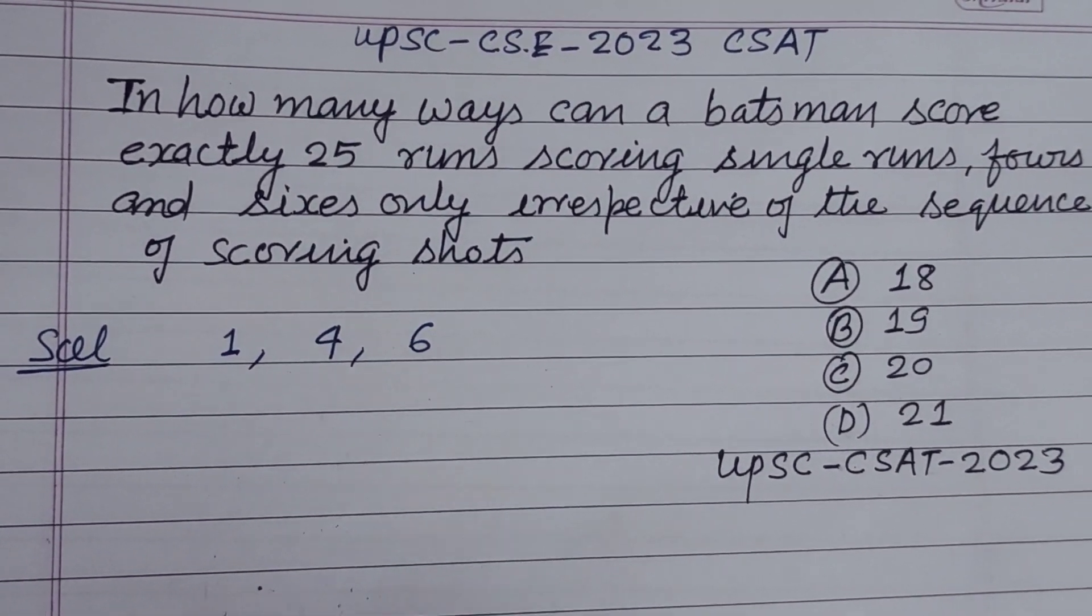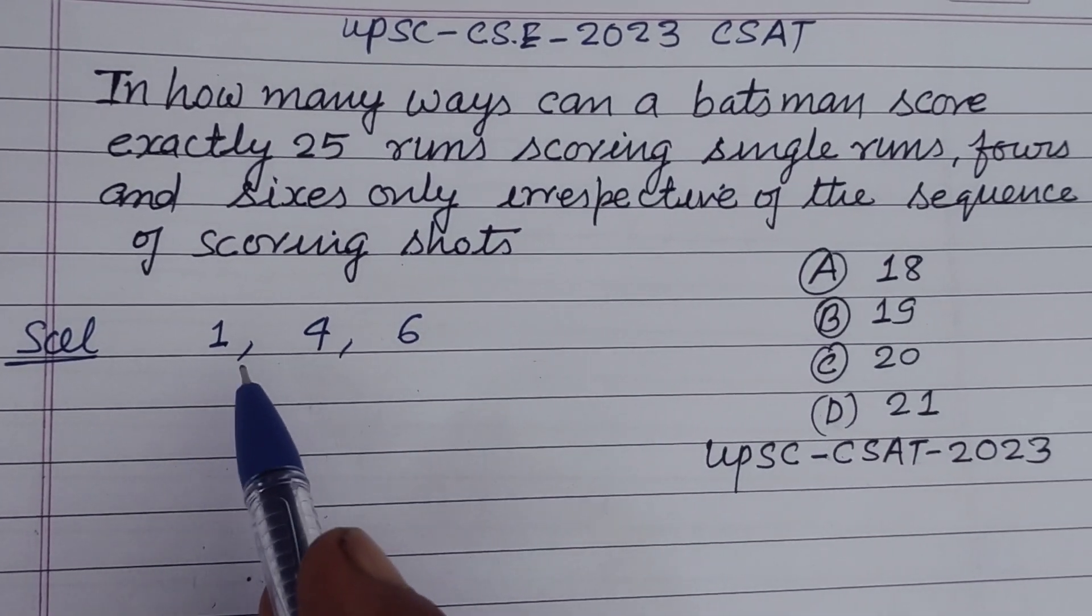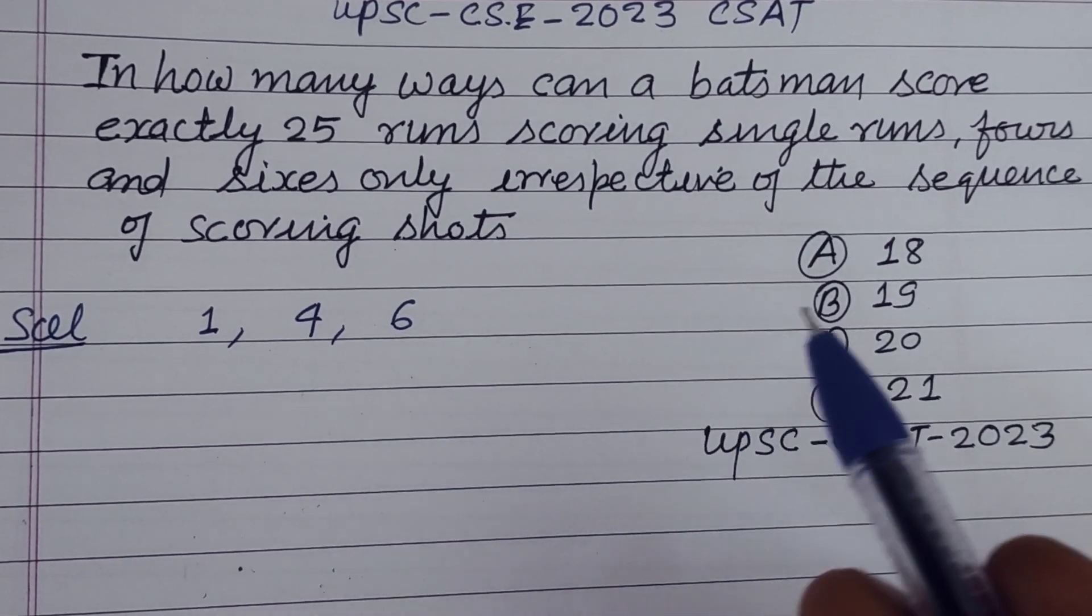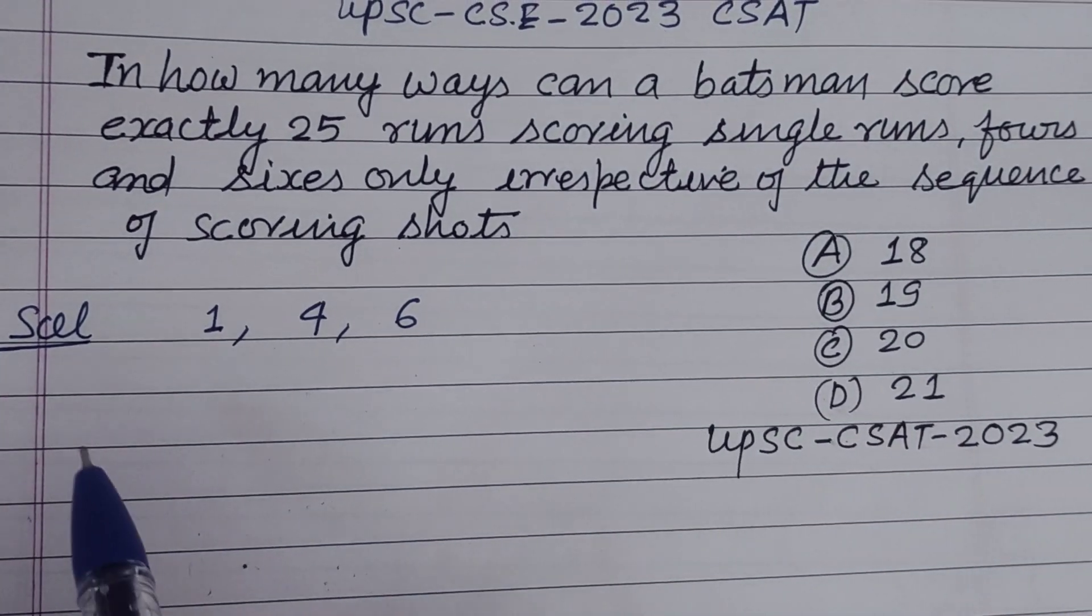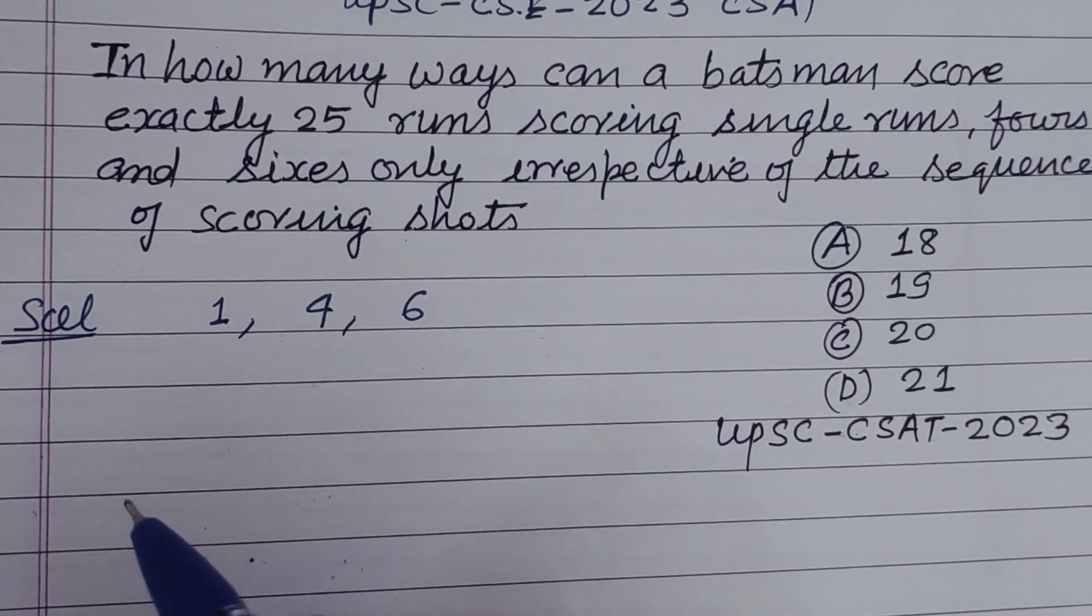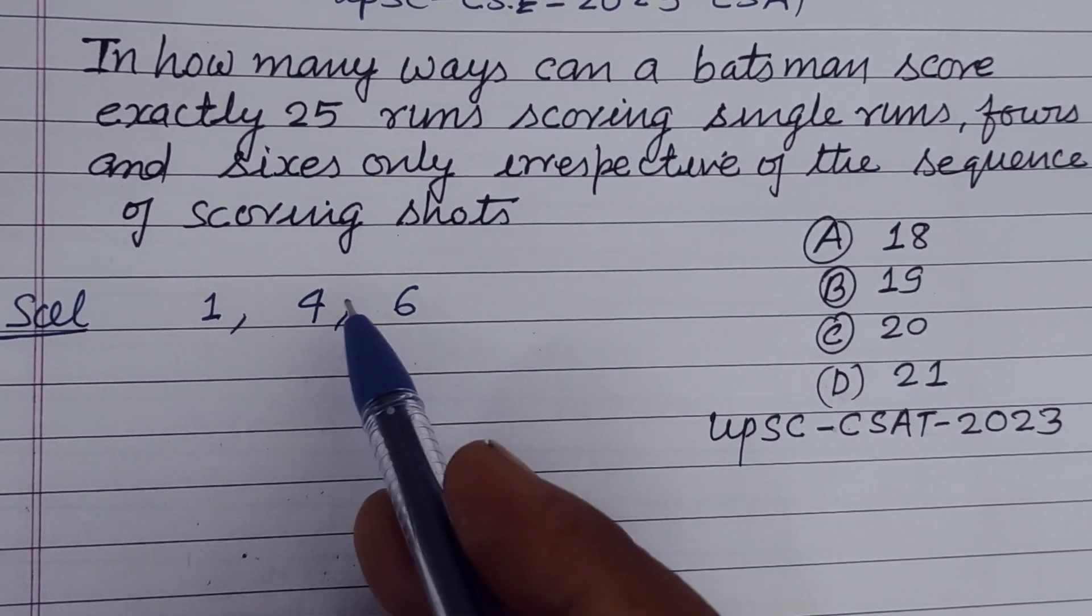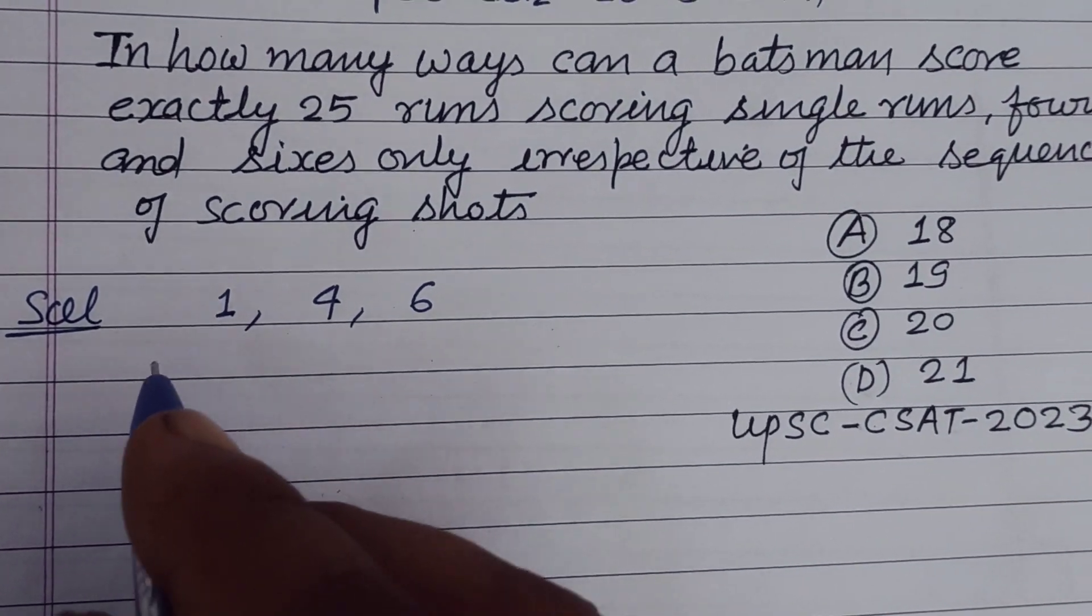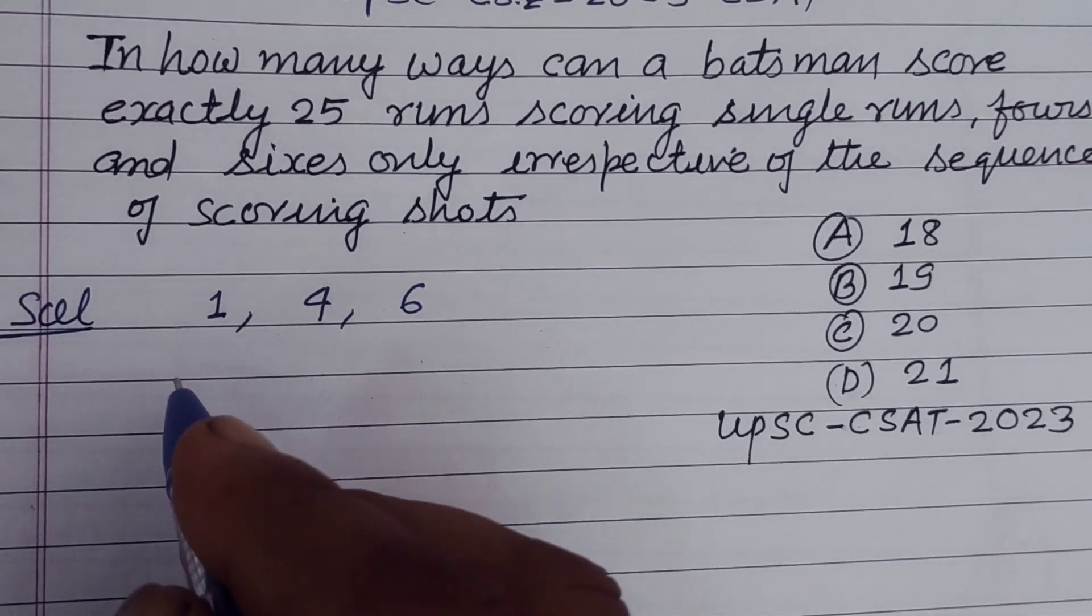So we make the combination 1, 4 or 6 that gives us 25, while it is single, 4 or 6 or all 3, all 2. Okay, so the conditions are the ways to make 25 runs are these.